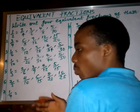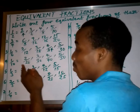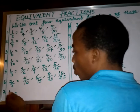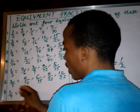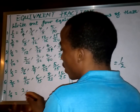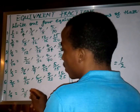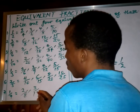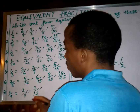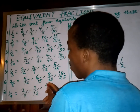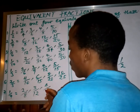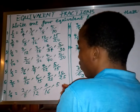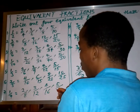I'm multiplying by numbers for every fraction to get the equivalent fractions. For 1 over 4: multiply by 2 — 2 times 1 is 2, 2 times 4 is 8. Multiply by 3 — 3 times 1 is 3, 3 times 4 is 12. Multiply by 4 — 4 times 1 is 4, 4 times 4 is 16. Multiply by 5 — 5 times 1 is 5, 5 times 4 is 20.